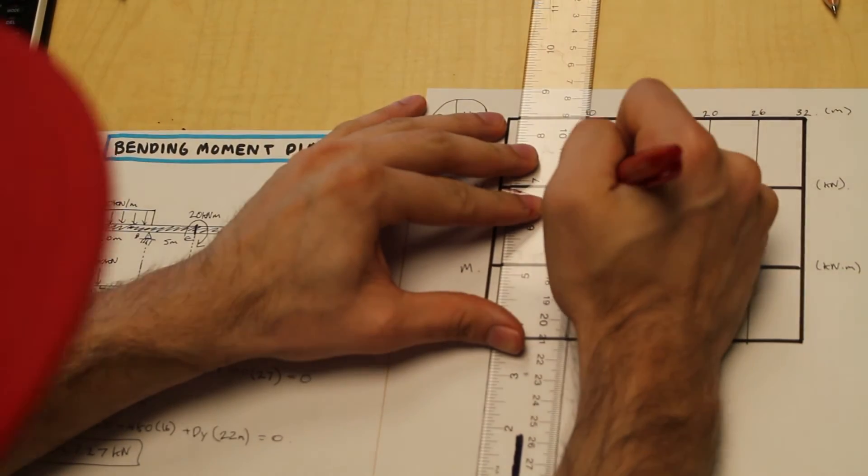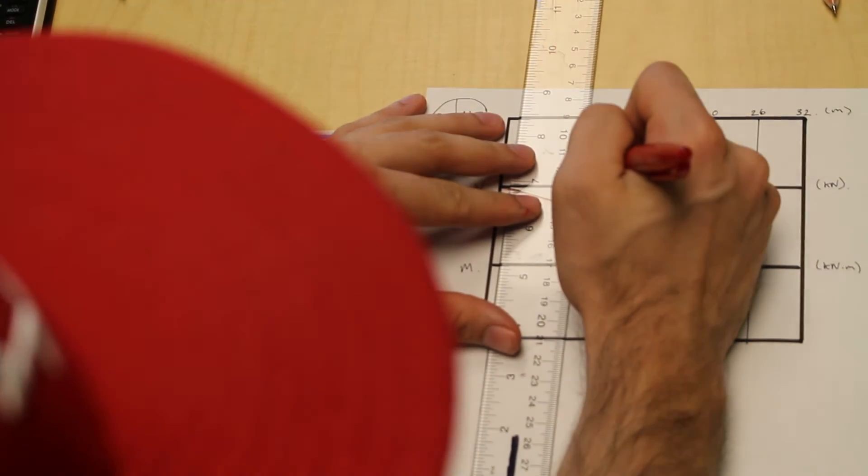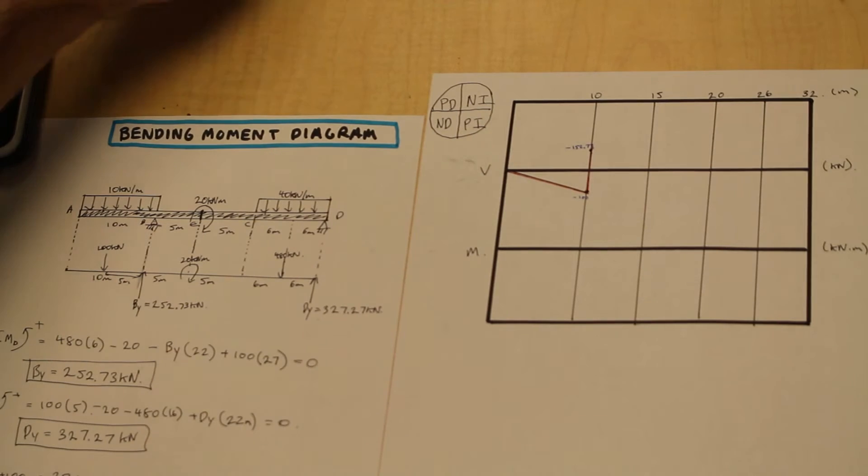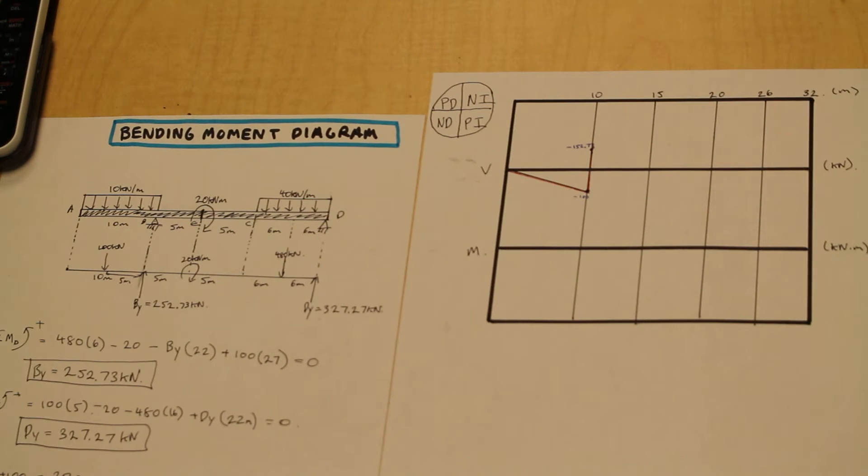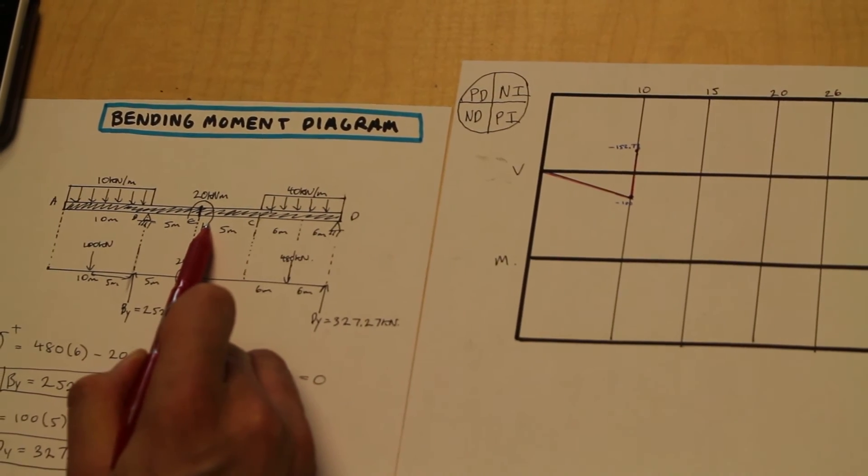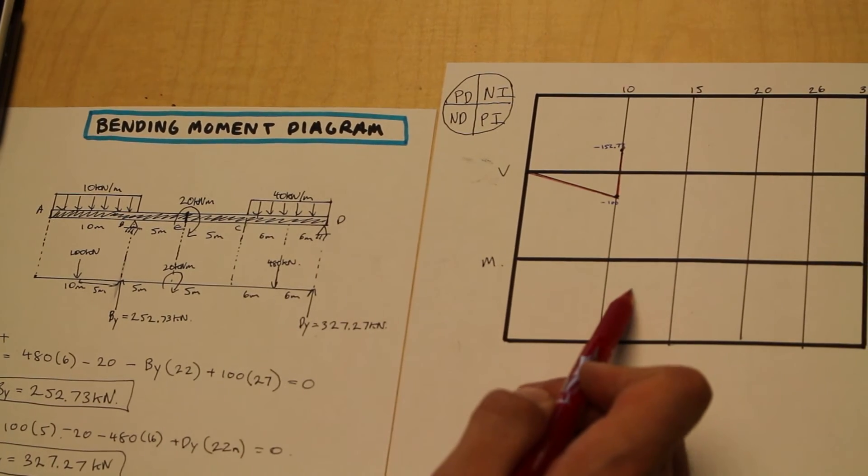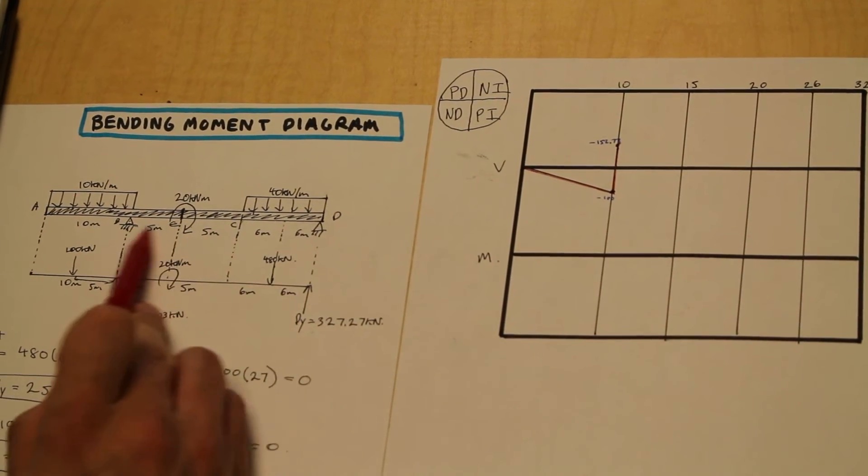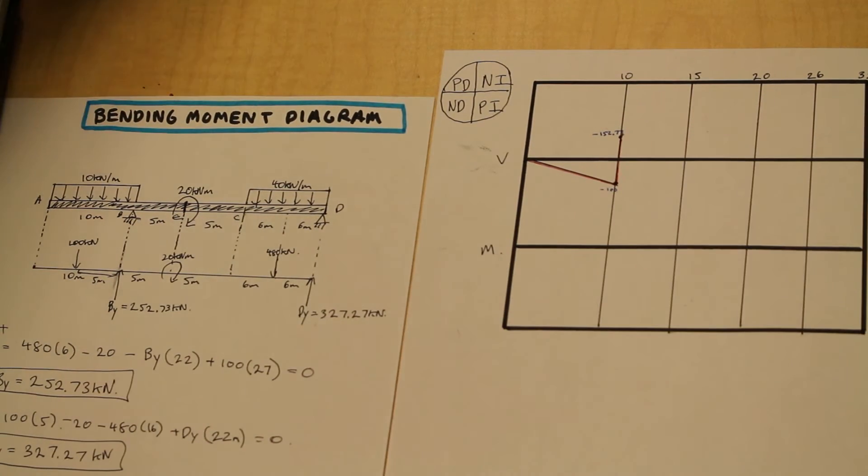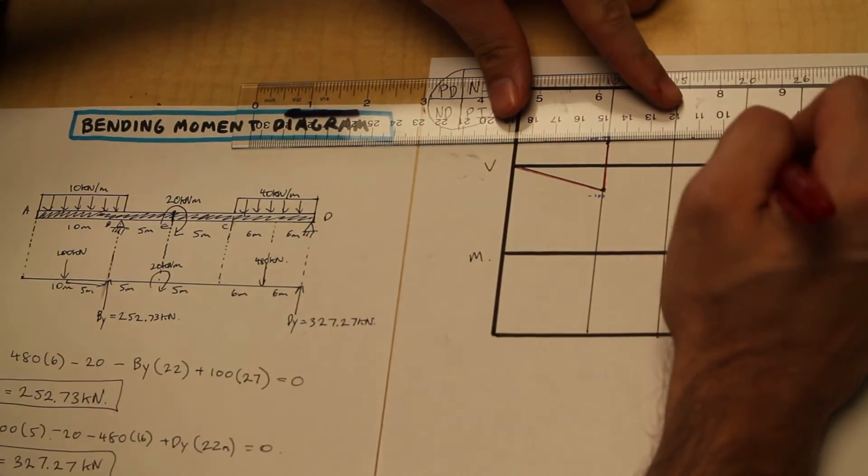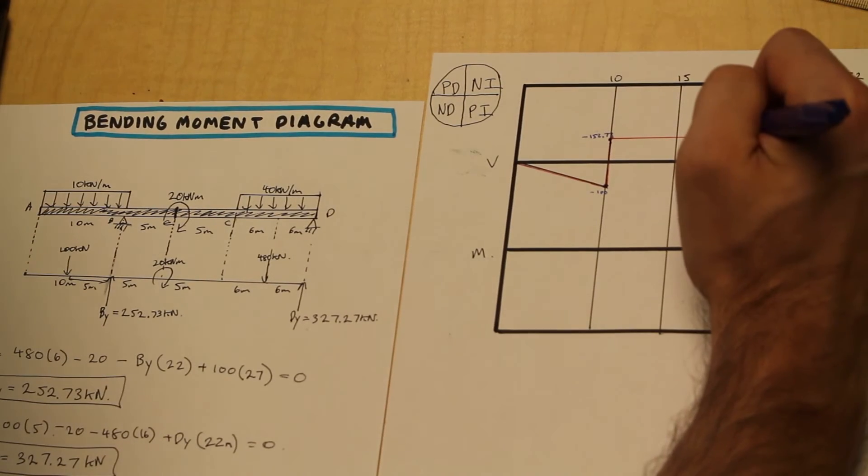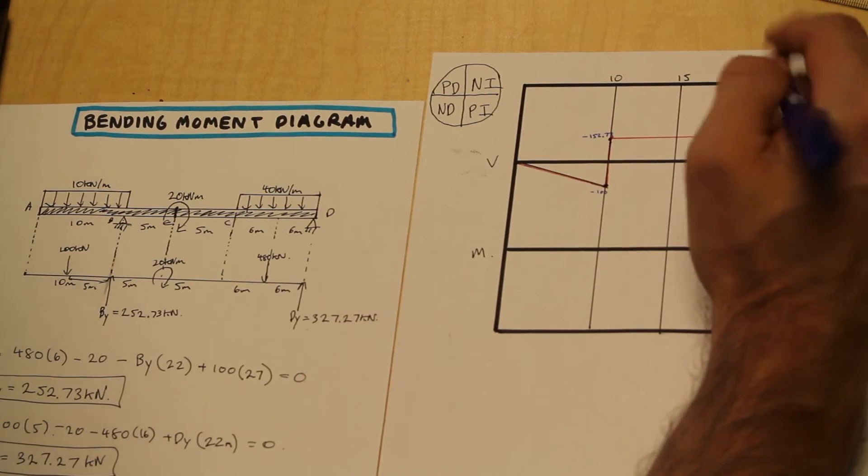Much easier than writing out all those equations and having to spend 30, 40 minutes on it. Okay, perfect. So next we have, we're starting from point B, we're moving over to point E. Now, as we can see, there's a moment here, but the moment doesn't affect the shear diagram. It only affects the moment bending diagram. So we're going to ignore that. And other than that, there's no other external forces acting between B and C. So that's going to be a constant line all the way to point C.